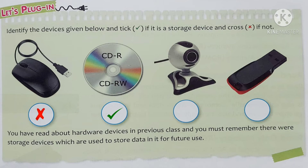Mark cross inside the circle. Next is pen drive. It is the most popular data backup device. It is a small, lightweight and removable drive. It is used for copying and moving data from one computer to another. Pen drive is a storage device. Mark tick inside the circle.